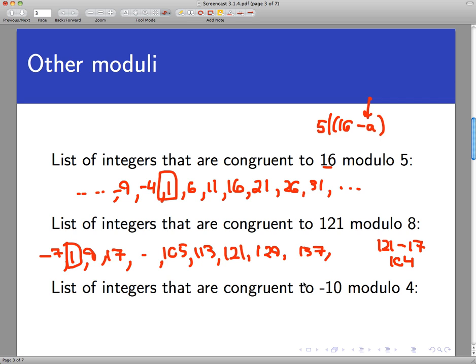Another example, let's start with a negative number and ask, of the infinitely many numbers, integers, that are congruent to negative 10, mod 4, which one is the least non-negative one in the list? The smallest that is either 0 or positive.